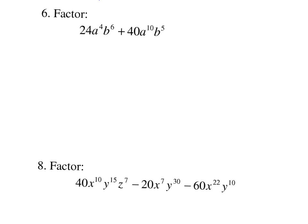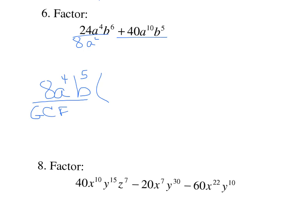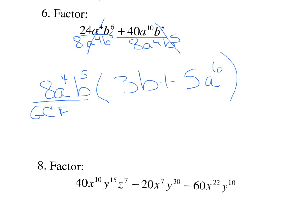Same thing here — identify the GCF before factoring it out. The largest number going into 24 and 40 is 8. For the variables: a to the 4th is common, and b to the 5th is common. Then divide by the GCF to find what's left in the parentheses. 24 divided by 8 is 3; the a's cancel; subtract the exponents on the b's. 40 divided by 8 is 5; subtract the exponents on the a's; and the b's cancel. Check by using distributive property.